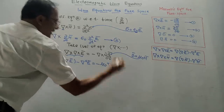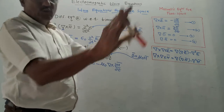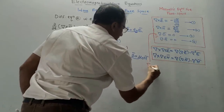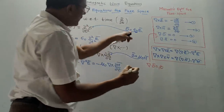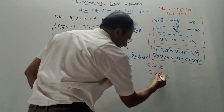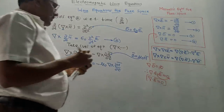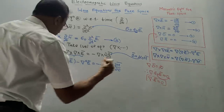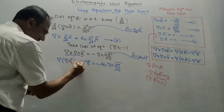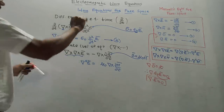From equation 3, del · D̄ = 0. Since D̄ = ε₀Ē and ε₀ is constant, this gives del · Ē = 0. So the first term del(del · Ē) on the LHS is zero and gets cancelled. Both sides contain a minus sign, so they become plus, and the term is removed.